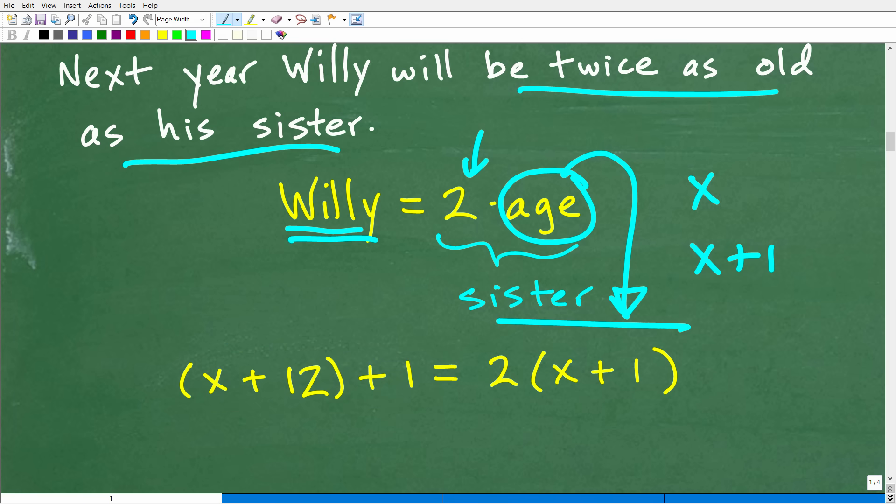Okay. So again, once you know how to solve one type of algebra word problem, you typically know how to solve different types of algebra word problems. But here's the key. You can't solve this problem right here unless you know how to solve equations. All right. So that's the next step. We have X plus 12 plus one is equal to two times X plus one. If we can solve for X, we will have found the sister's age right now. Okay. So let's go ahead and take that step,